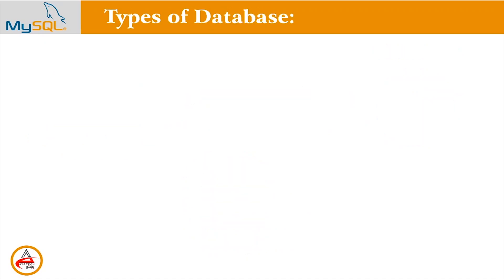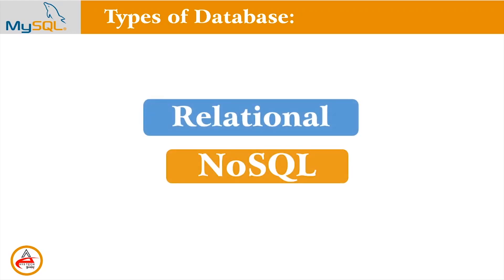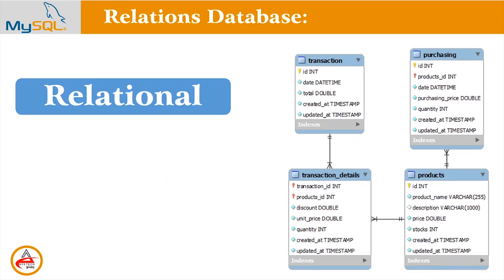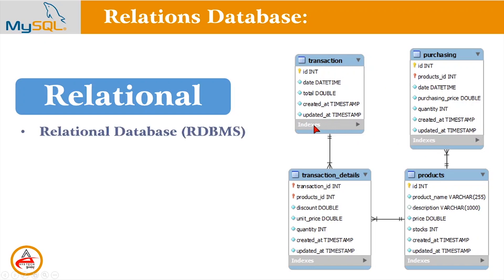There are many types of databases: relational databases and NoSQL databases. Relational databases are also called RDB — they use tables, and these tables are connected within the database. This is a relational database where data is connected to other data. If one data changes, related data changes too. You can use the RDB — relational database management system — which is MySQL.